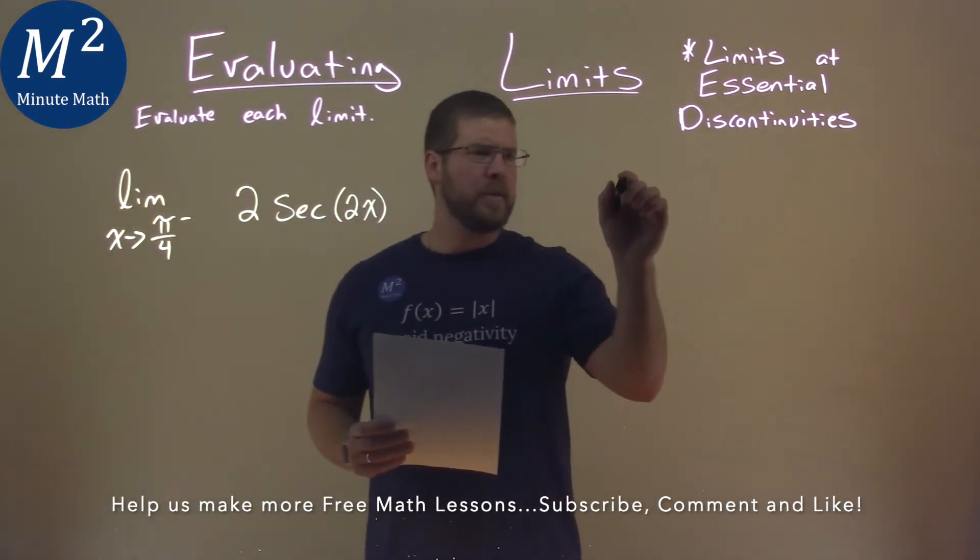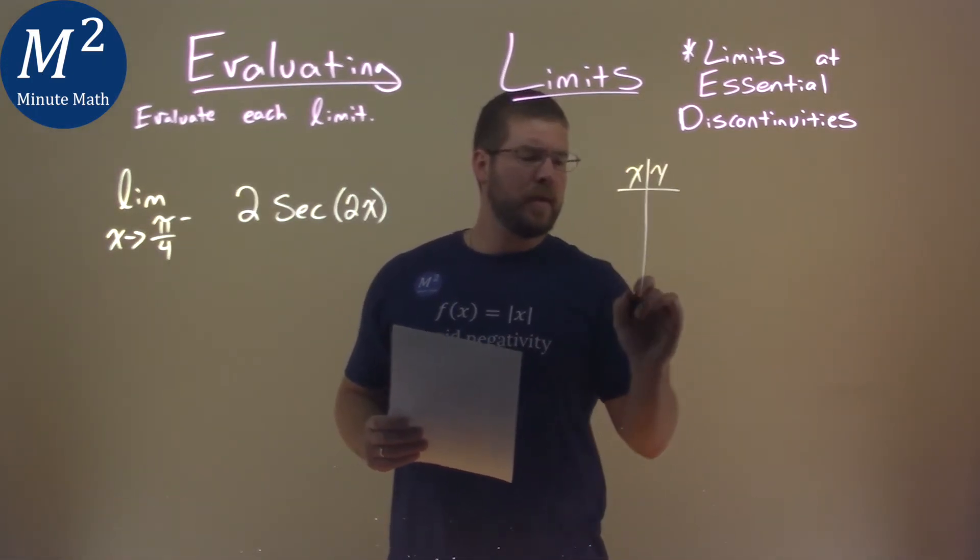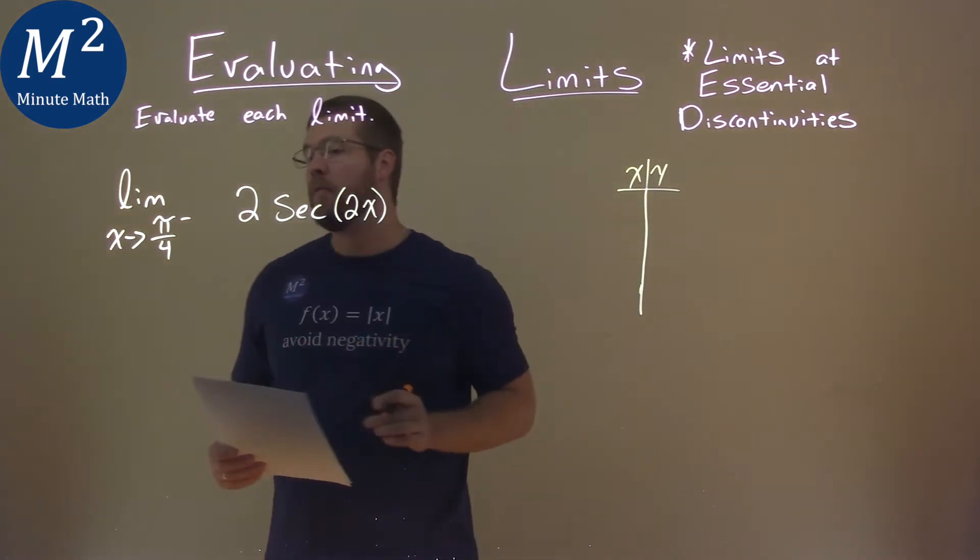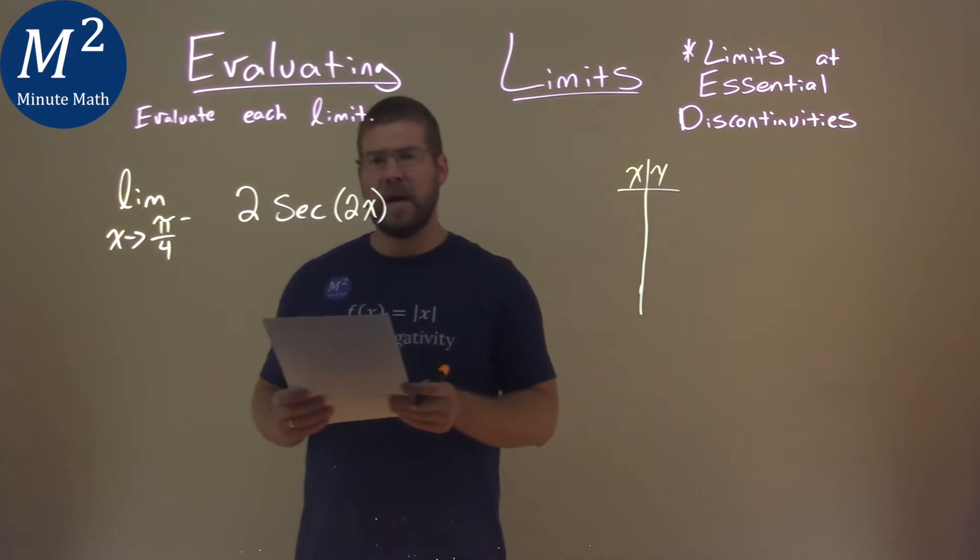Now let's use a table here. We have our x and our y value right there. And we're going to see what happens as we approach pi over 4 from the left, as we get closer and closer to pi over 4.